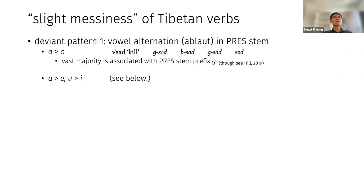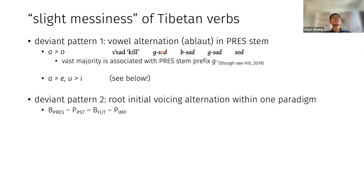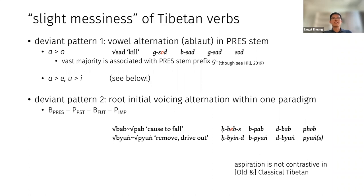Deviant pattern number two co-occurs with pattern one and is a little tricky to explain. In this pattern, you have a single verb with a paradigm in which different stems may have different voicing. For example, 'cause to fall' (bub/pub): in the present stem you have a voiced initial for the root, and that's also the case for the future stem. But in the past stem you get a voiceless initial, and similarly for the imperative. Schematically: voiced in the present, voiceless in the past, voiced in the future, voiceless in the imperative.